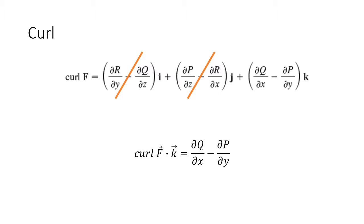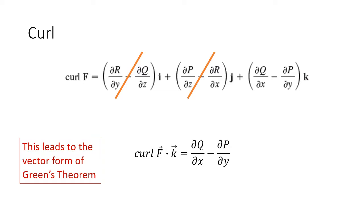Hopefully that sounds a little familiar, because we've seen that expression before — that's from Green's Theorem. The partial of Q with respect to x minus the partial of P with respect to y — that is Green's Theorem. It turns out, if you had read the extra material about the vector form of Green's Theorem, this is where it comes from — this is how we can derive Green's Theorem. Stokes' Theorem is really just the generalization of Green's Theorem from two dimensions into our third dimension.